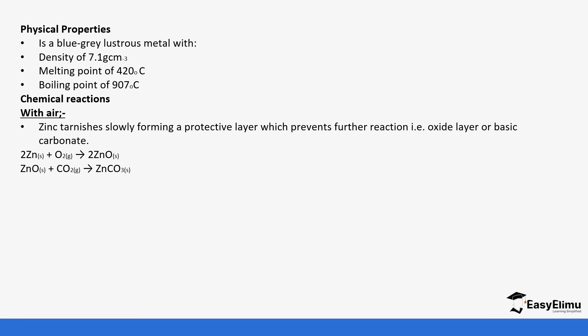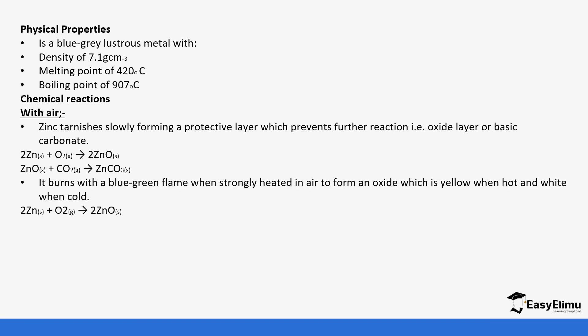Some physical properties of zinc: it is a blue-gray metal with a density of about 7.1 g/cm³. It melts at 420°C and boils at 907°C. It reacts with air to form an oxide layer of zinc oxide or basic zinc carbonate, where zinc oxide reacts with carbon dioxide to form zinc carbonate. Zinc burns with a blue-green flame in oxygen.